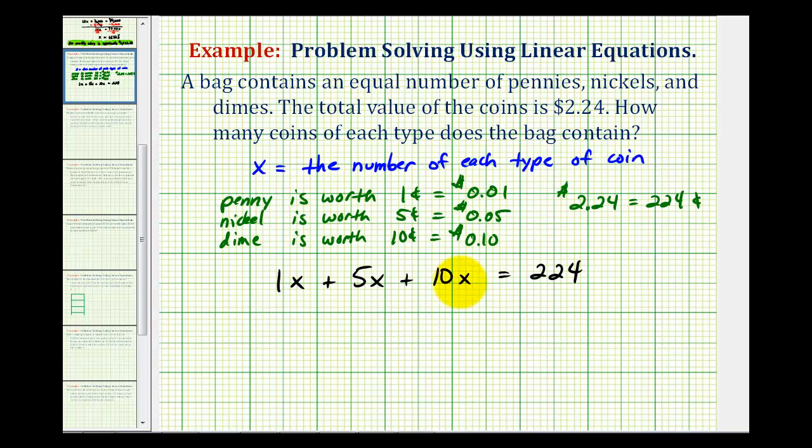Notice how I am leaving off the units here just so the equation looks a little cleaner. And now we'll solve this equation for x. So we'll start by combining like terms. 1x plus 5x plus 10x would be 16x equals 224.